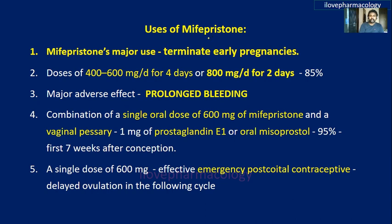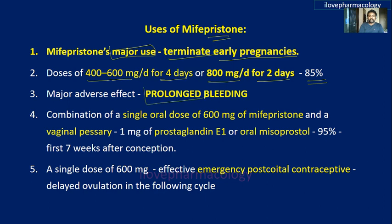The major use of mifepristone is for terminating early pregnancies. The dose required is 400 to 600 mg per day for four days, or 800 mg per day for two days, effective up to 85 percent. The major adverse effect is prolonged bleeding. A combination of a single oral dose of 600 mg mifepristone with vaginal pessaries of 1 mg prostaglandin E1 — gemeprost or oral misoprostol — is effective up to 95 percent of cases during the first seven weeks after conception.